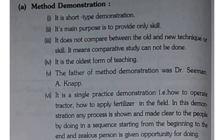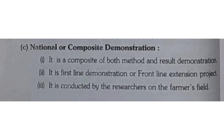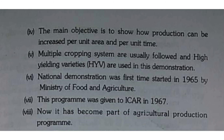Quick recap: Method demonstration — short, skill-based, no comparison, oldest, Dr. Seaman A. Knapp. Result demonstration — long, yes comparison, shows values, effectively adopted. National demonstration — mixture of both, front-line extension, researchers on farmer's field, multiple cropping system, high-yielding varieties, started 1965 by Ministry of Food and Agriculture, transferred to ICAR in 1967.